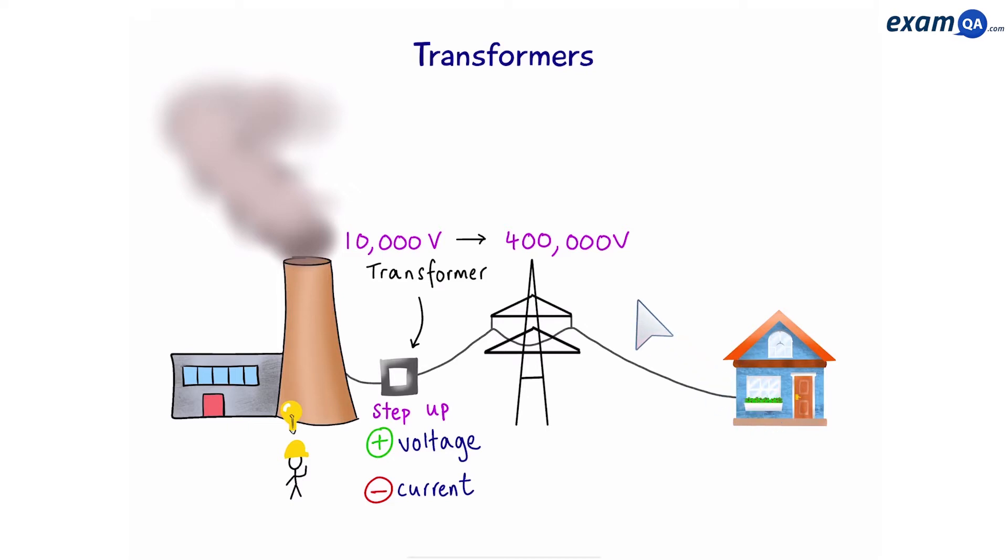However, having 400,000 volts going directly into your home can be a bit of a problem. So we're going to put another transformer here called a step-down transformer, which should bring this down to safe levels. For example, 230 volts. Now we can use the electricity safely in our homes.